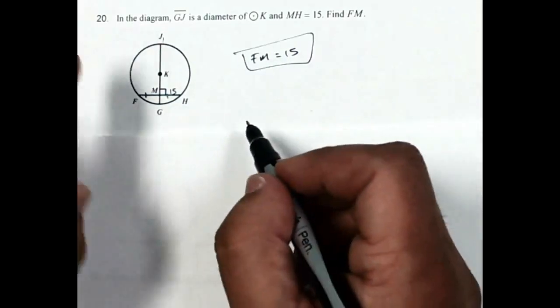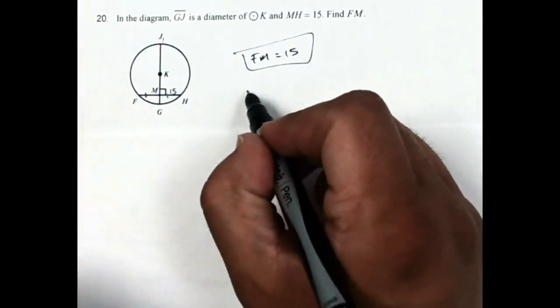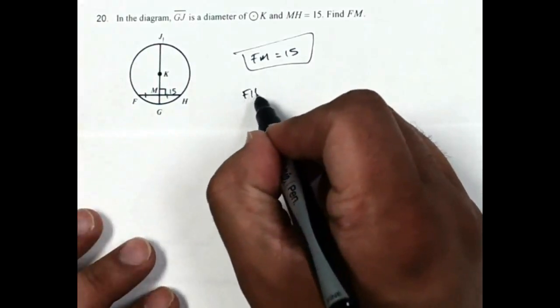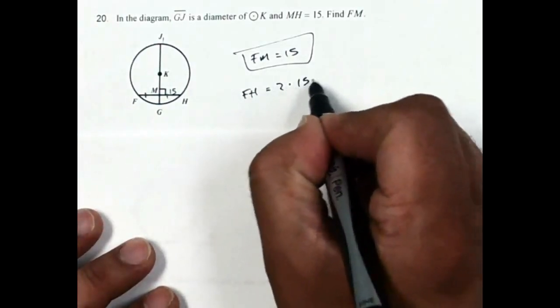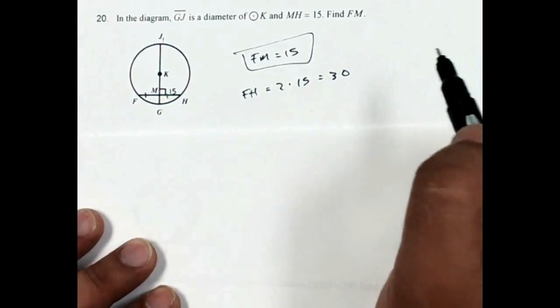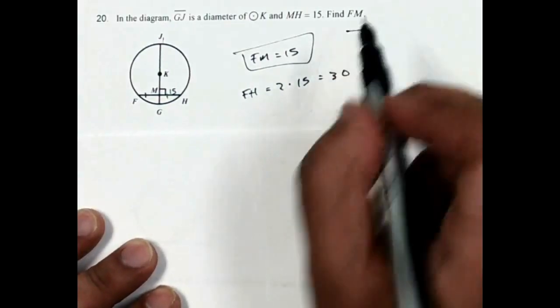If I ask you for FH, then you would take the 15 plus the 15, or do 15 times 2, and you would get 30. So just be careful on this one, which one I'm asking you for.